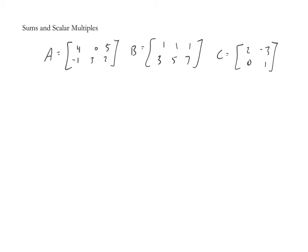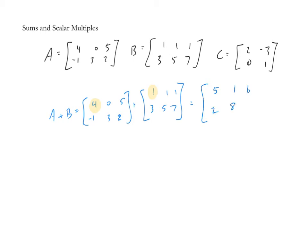The first main topic is sums and scalar multiples. Two matrices are equal if they have identical size and every entry is the same. Sums and scalar multiples work as we'd hope: adding two matrices means adding corresponding entries, and a scalar multiplies every entry. For example, A plus B: we take matrix A (4, -1, 0, 3, 5, 2) plus matrix B (1, 1, 1, 3, 5, 7) and add corresponding entries to get (5, 0, 1, 6, 10, 9).